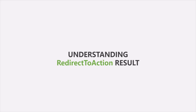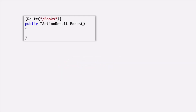Sometimes in a real-world application, we might want to redirect the user to another URL when they have typed some other URL which no longer exists. Let's understand this with a business scenario. Let's say you are creating an eCommerce application and initially you are only selling books. At that time, you created an action method to show all the books to the user. So here we have this books action method and the route is defined as slash books, so whenever the user types slash books, we execute this method and display all the books.